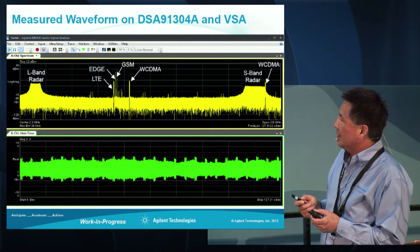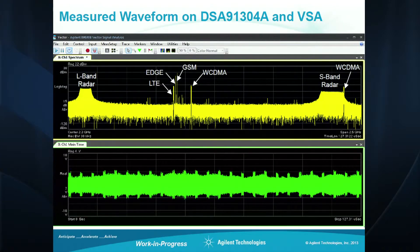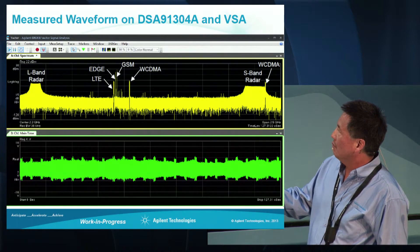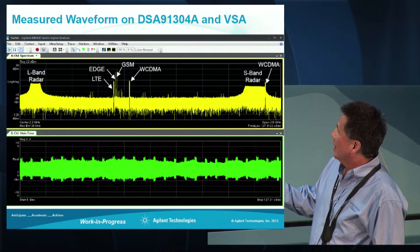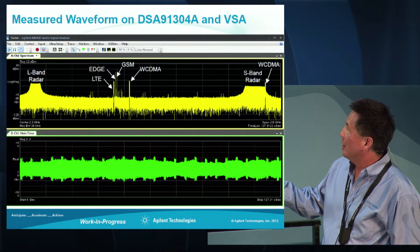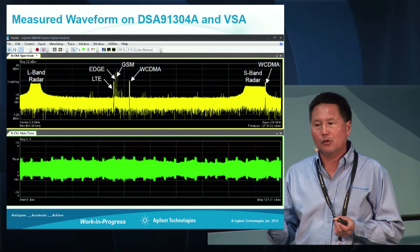This is a signal we created with that test setup — also what we're showing on the floor. The composite signal is comprised of an L-band radar signal on the left, then our wireless emitters: LTE, EDGE, GSM, WCDMA — commercial off-the-shelf. Then we have our S-band radar. Notably, we also have another WCDMA emitter that is parked inside the band of the radar emitter, which we thought would be interesting for looking at coexistence issues between a radar signal and a comm signal.